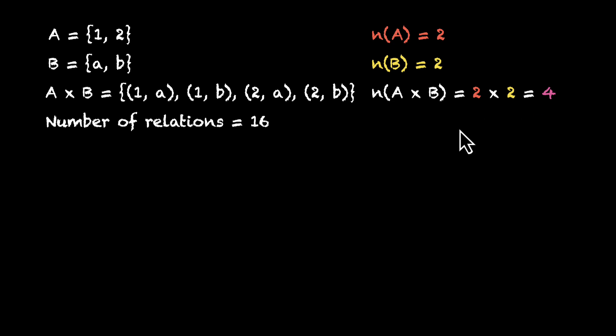16 is actually 2 to the 4. Because every element in the cross product had a choice to say yes or no. And because we made that choice 4 times for 4 elements, the total number of relations becomes 2 to the power 4, that's 16. This is where the magic is happening.